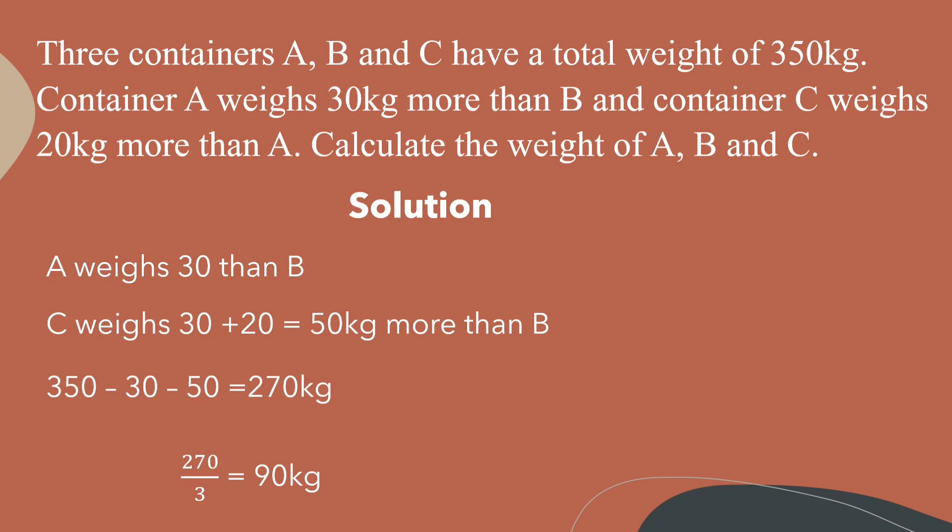Now that we have found the base weight we can add back those weights that we took out originally to obtain the weight of containers A, B, and C. A would be equivalent to 90 plus 30, that is the base weight of 90 plus 30 kilograms. This gives me 120 kilograms.